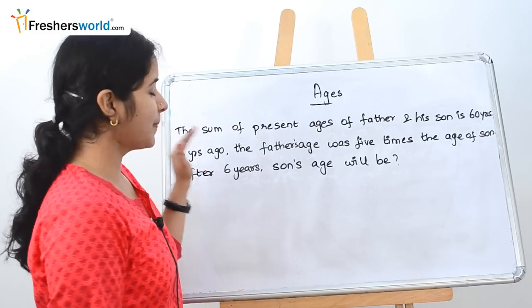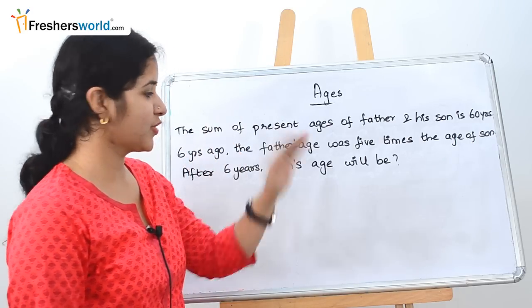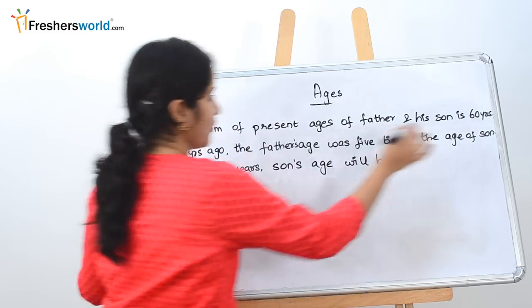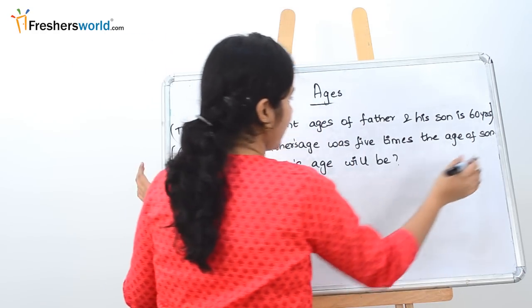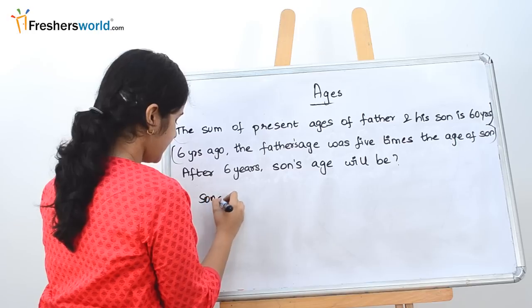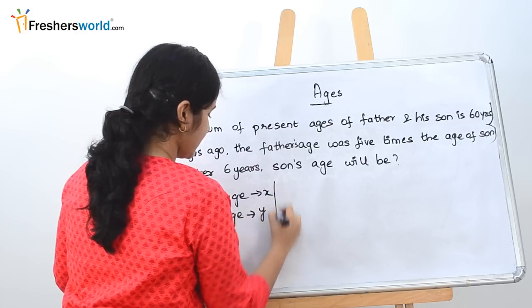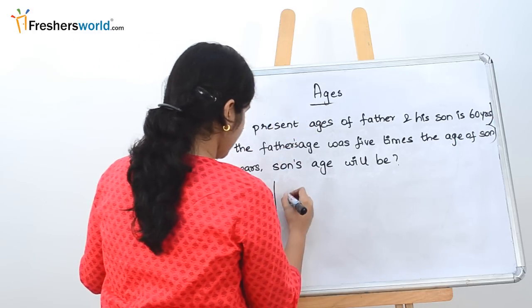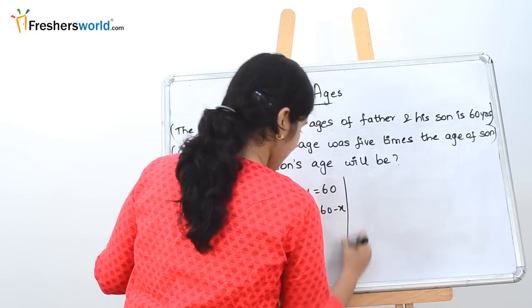The next question: The sum of the present ages of a father and his son is 60 years. Six years ago, the father's age was 5 times the age of the son. After 6 years, what will be the son's age? First, segregate: the first part is about the sum of present ages; the second part is about 6 years ago. Assign variables: let son's age be x and father's age be y. From the first part: x + y = 60, so y = 60 − x.